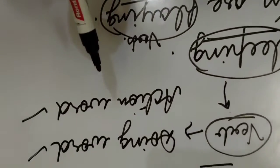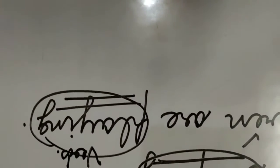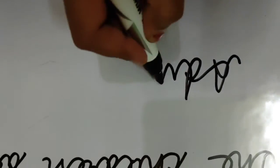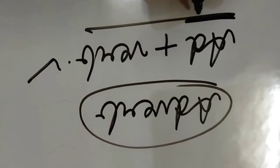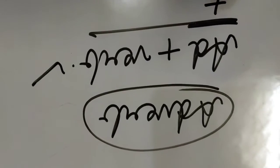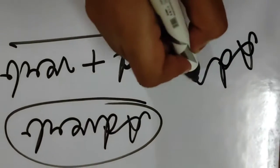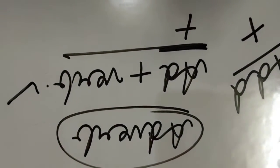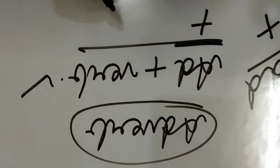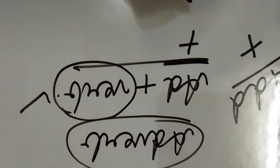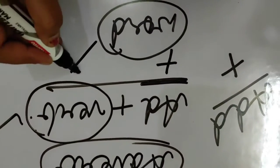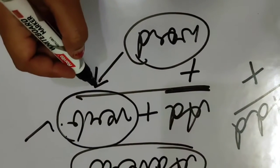Now, have you read this word adverb? Adverb means add plus verb. Verb I have already told you — it is an action word. Now, add. What is the meaning of add? Add means to plus — in mathematics we have done that, right? So here also, add means that something is being added to the verb. There is some word which will be added to the verb.